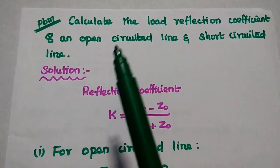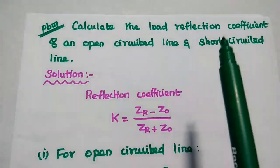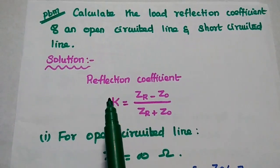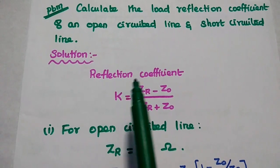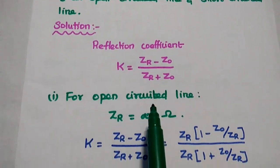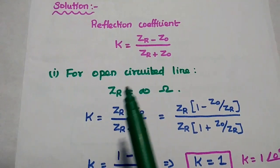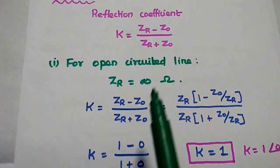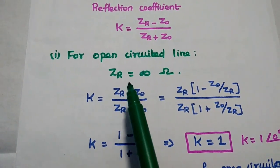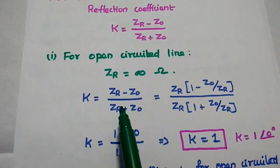The first problem is to calculate the load reflection coefficient of an open-circuited line and a short-circuited line. In the solution, first we write the formula: K is equal to ZR minus Z0 divided by ZR plus Z0. We are going to calculate the reflection coefficient for the open-circuited line. As we all know, for an open-circuited line, the receiving end impedance is equal to infinity. We cannot substitute this infinite value directly in this formula.